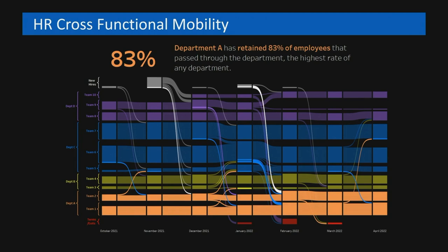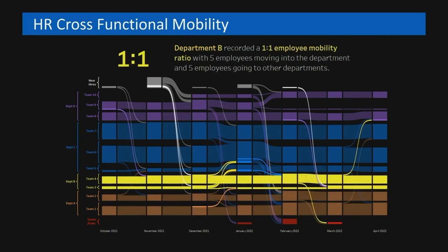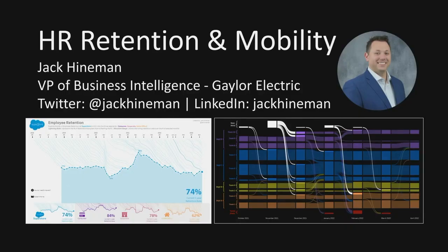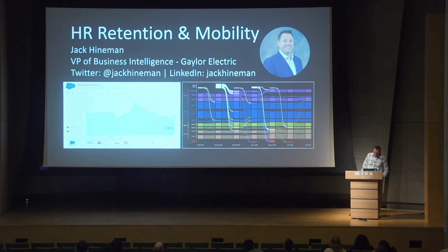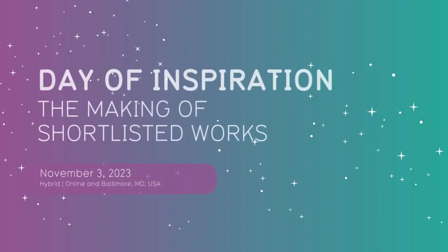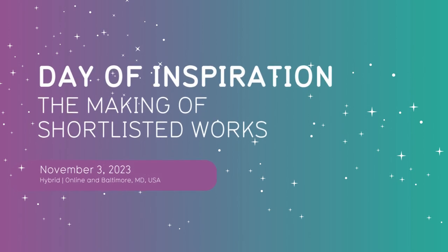Department A kept most of the employees that passed through there, which was the highest of any department. And then you can see the teams in Department B kind of have this one-to-one where they're passing employees back and forth — as many leave the team as come into it. So that's a walk through both my shortlisted works. Reach out to me if you have any questions or at lunchtime. Thank you.